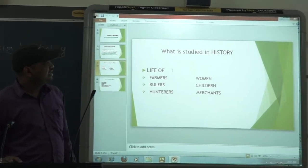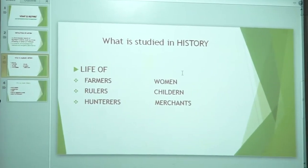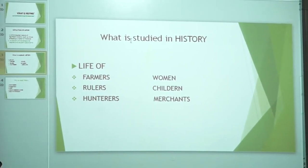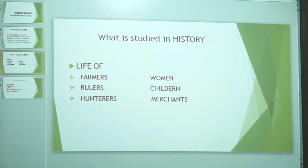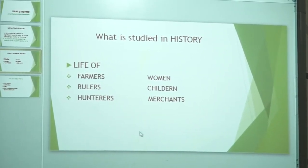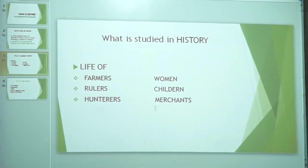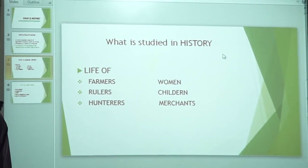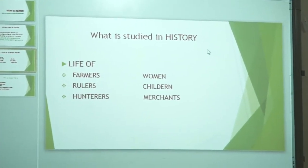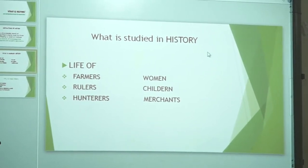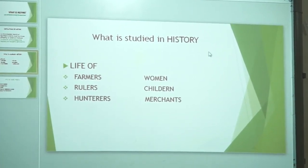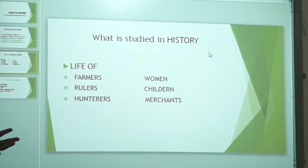What things are studied in history? There are certain things which are focused more. For example, the life of different people is studied. Like the life of farmers — farming started some 11,000 years ago, and the techniques and the farmer's life were very different then. Today's farmer's life is quite different. So there is a comparative study between the farmer of the past and the farmer of today.